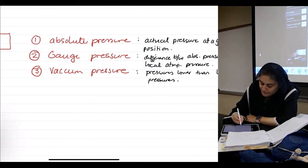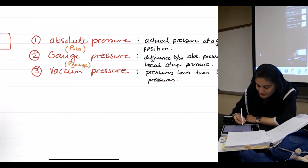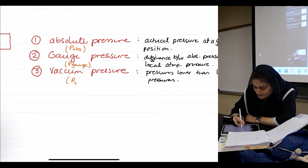So, absolute pressure, the symbol for it is P absolute. Gauge pressure is P gauge. And this is P vacuum.